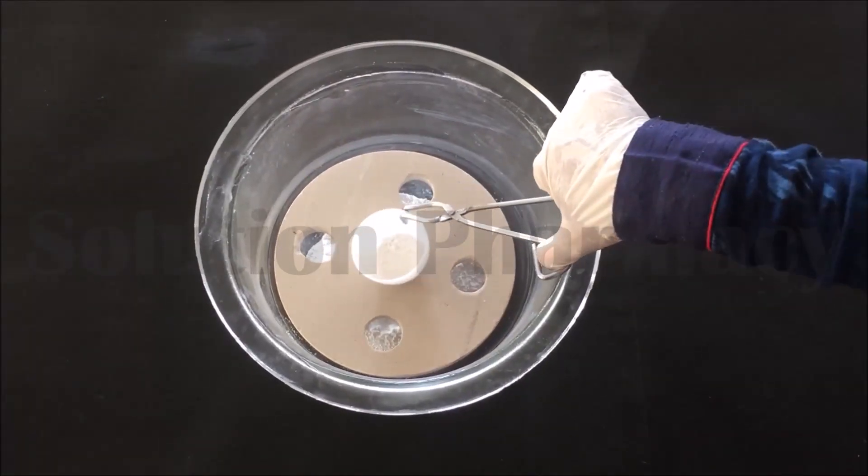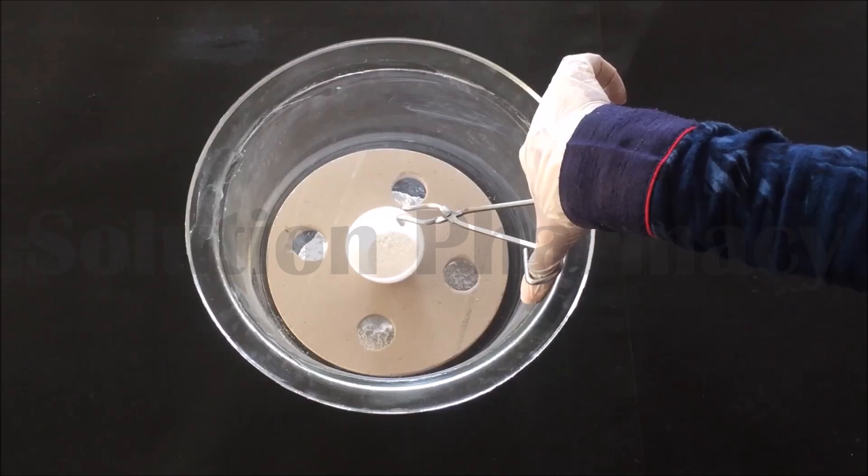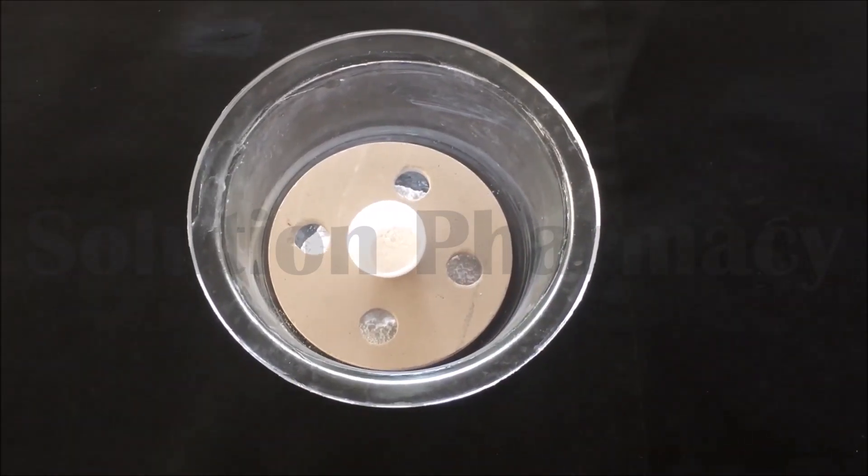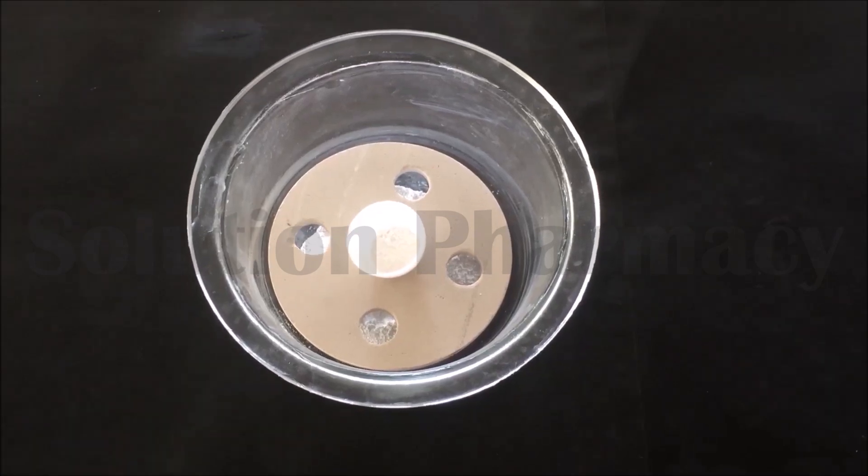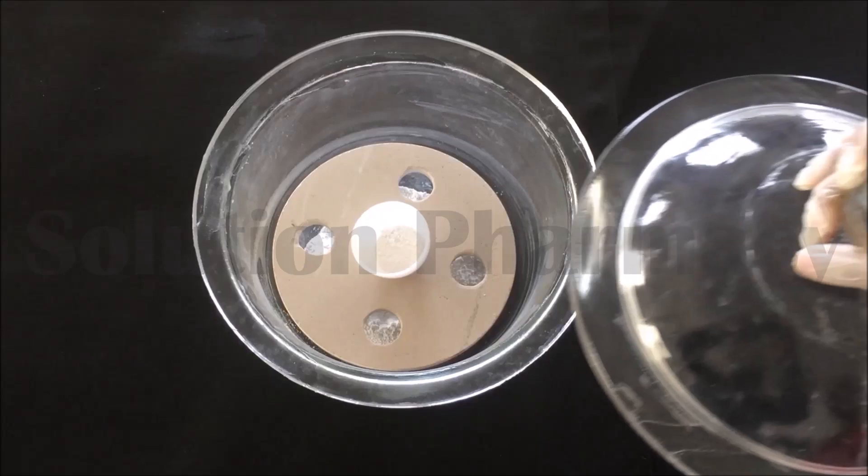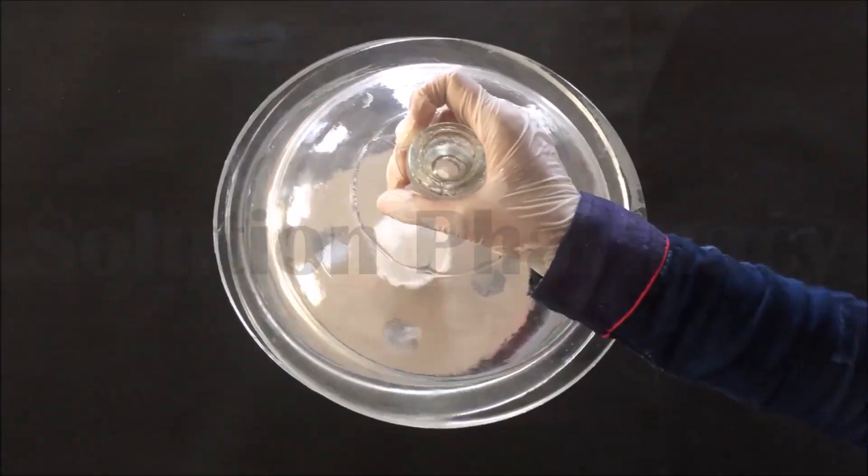Now insert hot crucible containing powder dry drug and put it over the perforated disc of desiccator with the help of tongs. Here we have inserted hot crucible containing dried material into the desiccator to cool it so that it will not reabsorb moisture during cooling. Now cover the desiccator with the lid. Slide the lid in this way over the desiccator to close it.